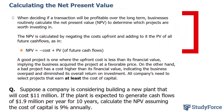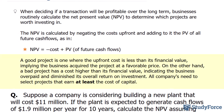When deciding if a transaction will be profitable over the long term, businesses routinely calculate the net present value to determine which projects are worth investing in. The net present value is calculated by negating the costs up front and adding it to the present value of all future cash flows, as shown in this formula. NPV is equal to the cost negated plus the present value of all future cash flows. We say that a project is good if the present value of all future cash flows generated is greater than the upfront cost — when this happens, the NPV is positive.